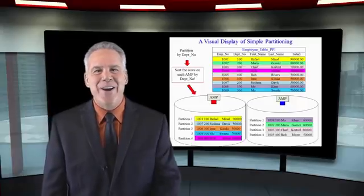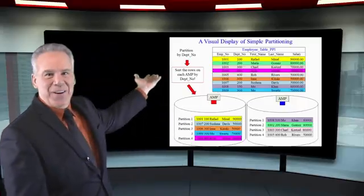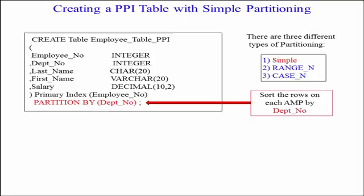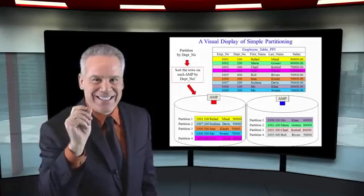Here you can see our nine rows in our table. This was distributed by the primary index of employee number, and the rows went to the proper AMPs. The only difference is each AMP sorted the rows not by the row ID, but by department number because that was the partitioning statement.